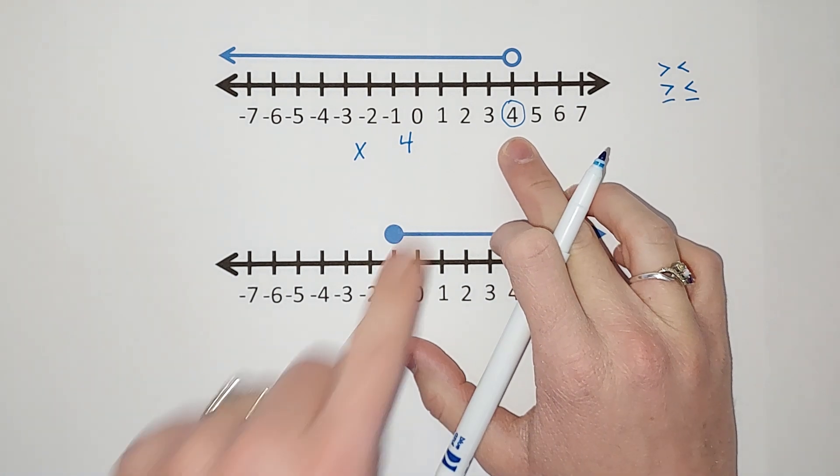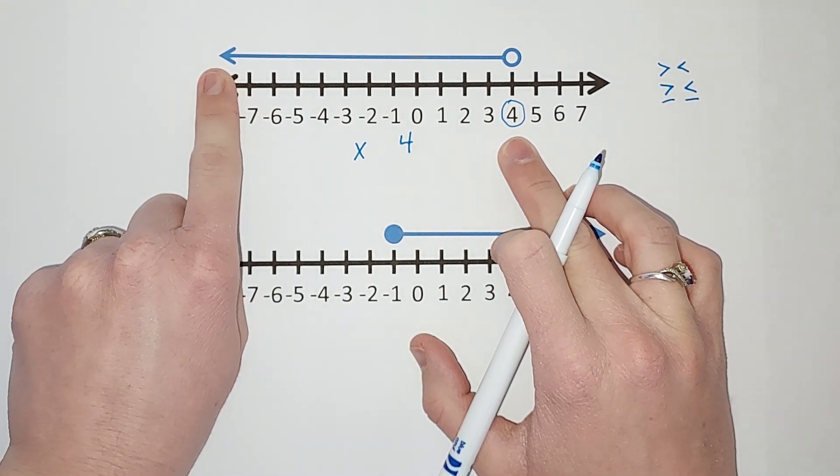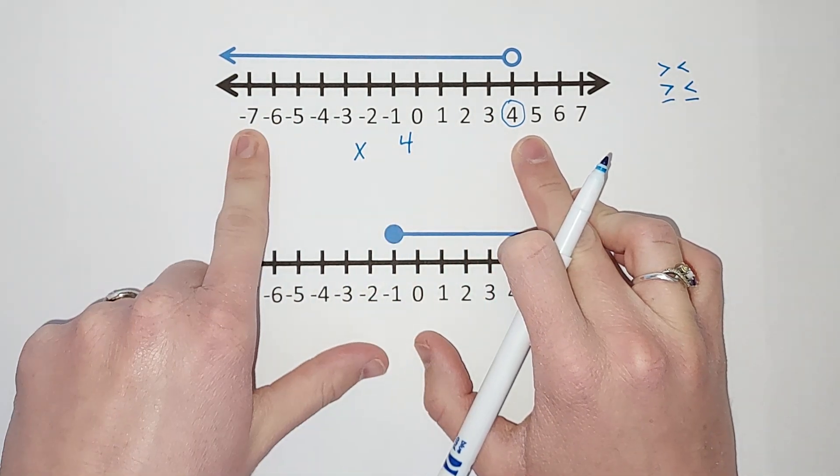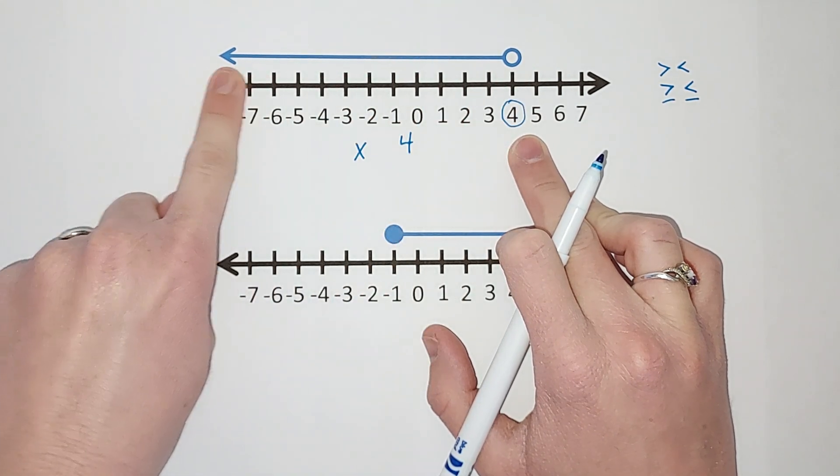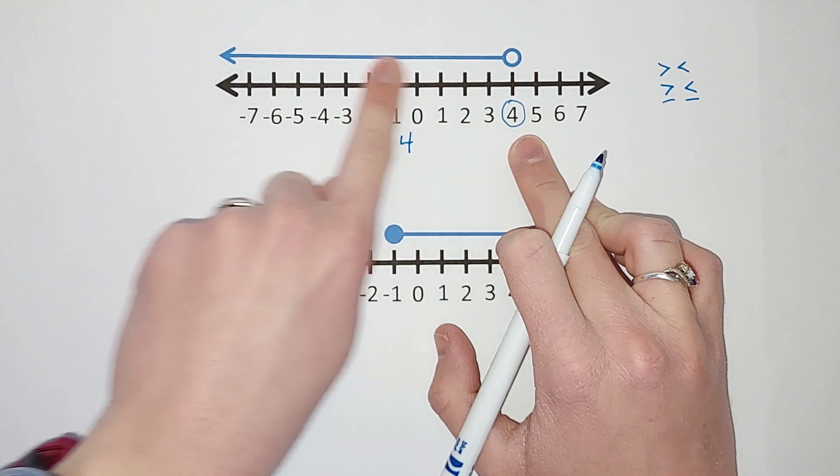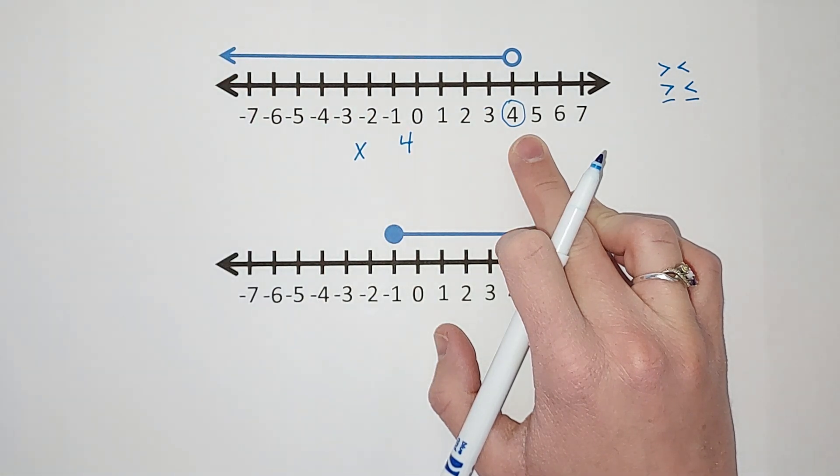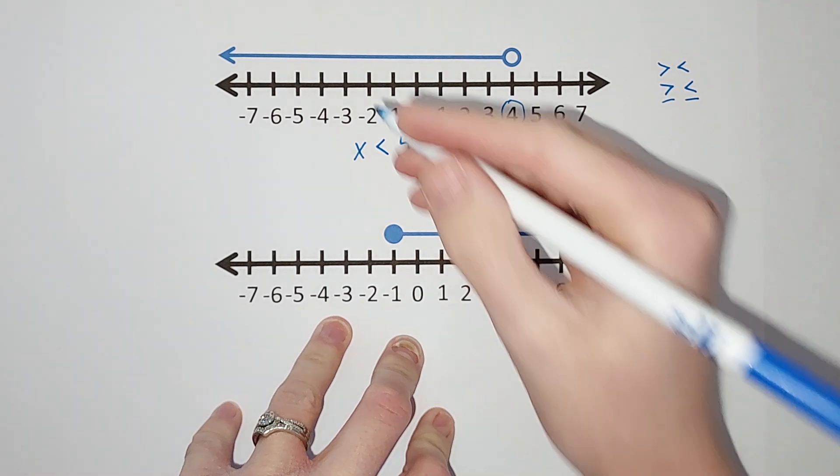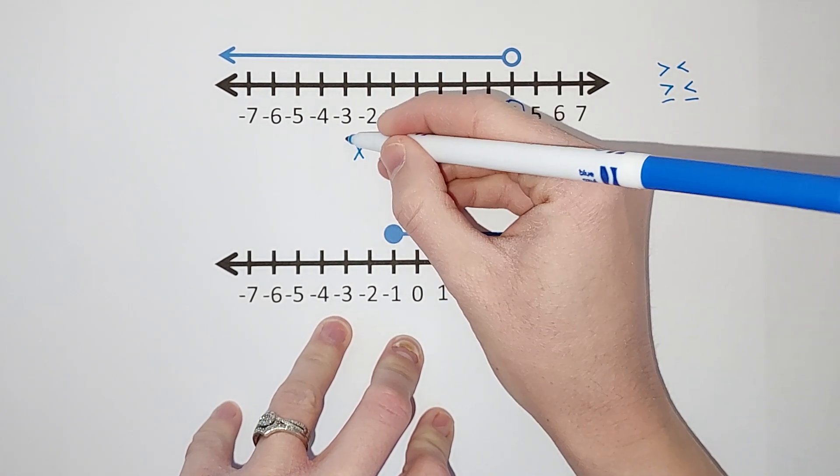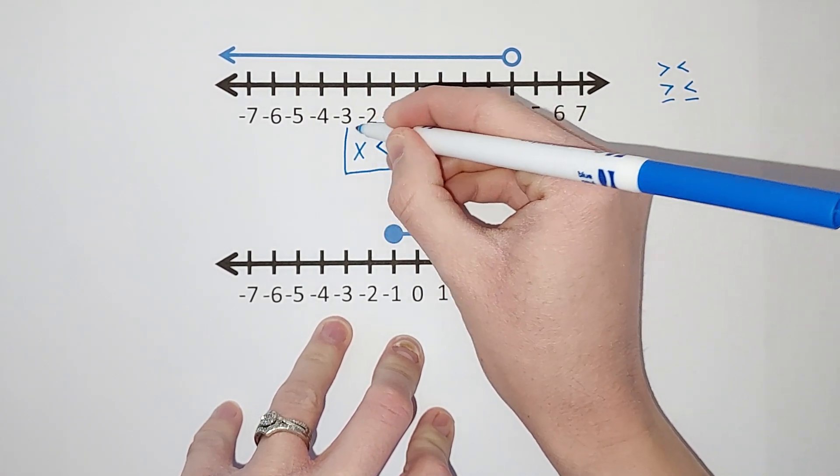So we are looking at, my arrow goes to the left. The numbers to the left of 4 are smaller than 4, right. So this represents what x can be and it's going to the left of 4, so it's numbers less than 4. Okay, so our inequality is x is less than 4.